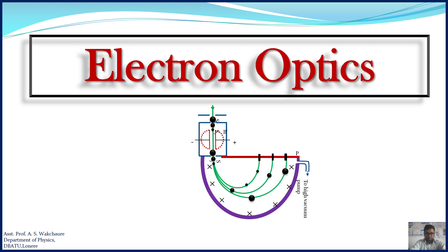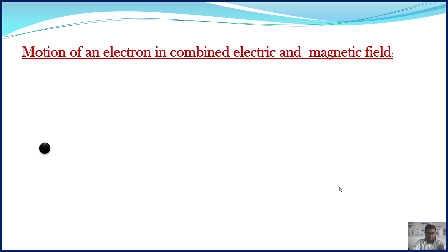Hello, this is Ajinkya Vakshavare, Assistant Professor, Department of Physics. This is the fifth video regarding electron optics. In this video, I am going to explain the concept of motion of an electron in combined electric and magnetic field.